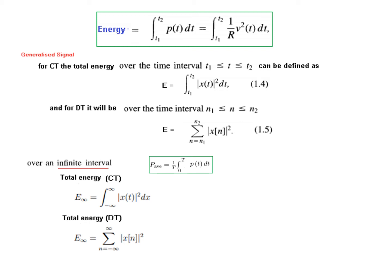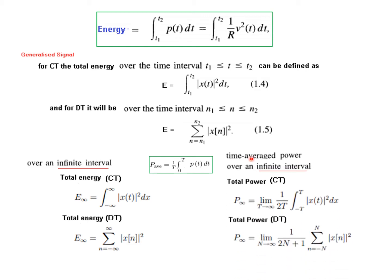That was for a limited time period. If we go to infinite time, the energy integral for continuous time will have limits from minus infinity to plus infinity. For discrete time the limit also becomes minus infinity to plus infinity. Average power over an infinite interval is the limit as T tends to infinity of 1 over 2T times the integral from minus T to plus T — we use 1 over 2T because our limit is now from minus T to plus T.